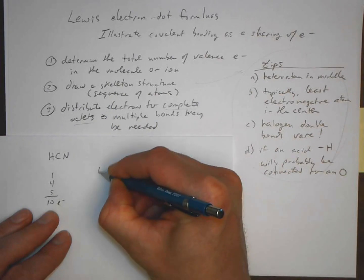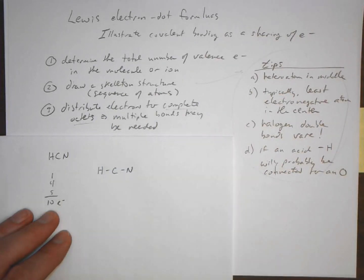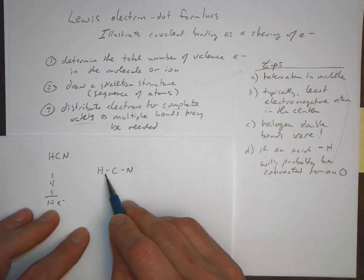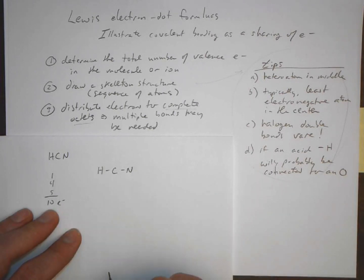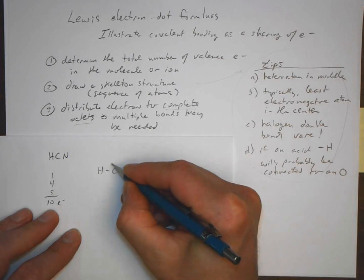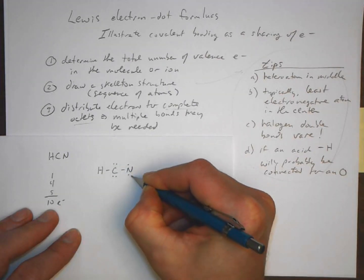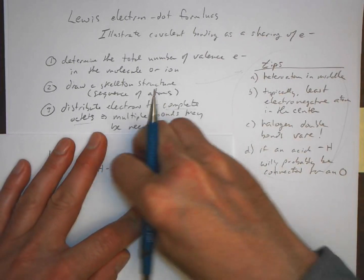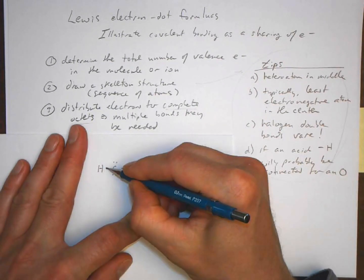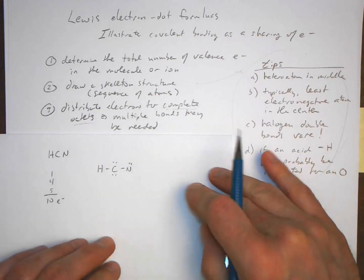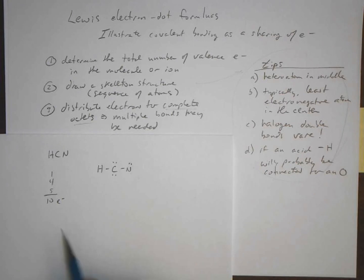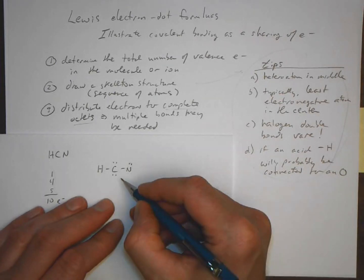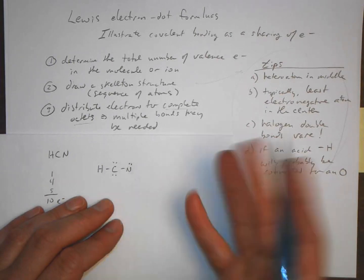Next, draw a skeleton structure. Placing carbon in the center — as the least electronegative atom — with hydrogen on one side and nitrogen on the other, we account for four electrons in the two single bonds, then distribute remaining lone pairs. We place remaining electrons on nitrogen to reach all ten electrons. However, carbon has its octet but nitrogen only has four electrons around it.